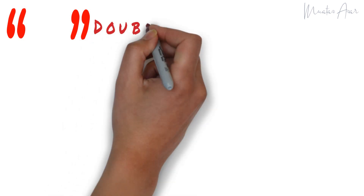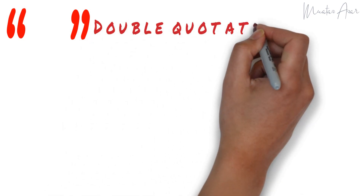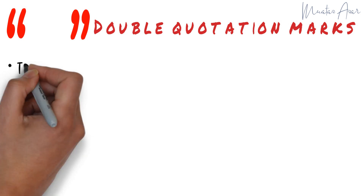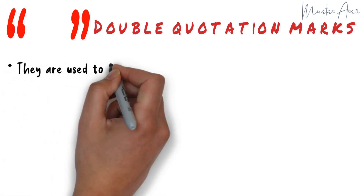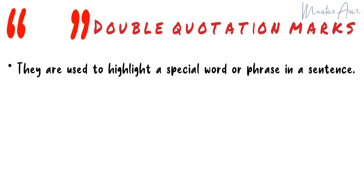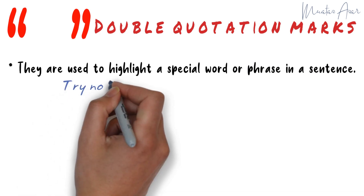Quotation marks or inverted commas can take two forms: double or single quotation marks. Double quotation marks are used to highlight or draw attention to a special word or phrase in a sentence.